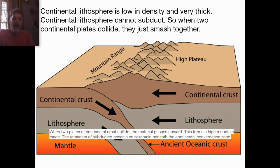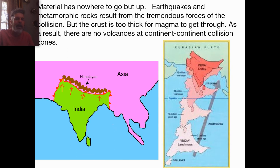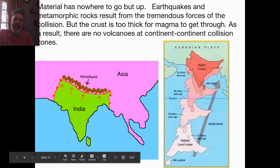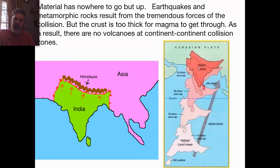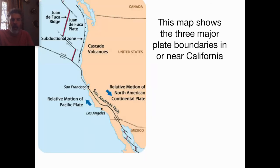In continent-to-continent convergent boundaries, you don't get volcanoes — what you get are very large mountains, very popular with mountain climbers. This is because continental lithosphere is low in density but very thick, and the plates have nowhere to go but up. They smash together and go up. The best example is the Himalayan mountain range and Mount Everest — India is a plate in collision with the Eurasian plate, as shown in a time-lapse animation.